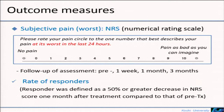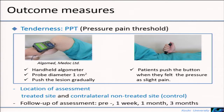As for outcome measures, the intensity of maximum subjective pain at the site of the region was measured using NRS, and the ratio of responders was calculated. Responder was defined as a 50% or greater decrease in NRS score one month after treatment compared to before treatment. The threshold of pressure pain — hereafter PPT — was measured using a handheld algometer. The clinician compressed the target site at constant speed and the patient pushed a button when they felt the pressure as slight pain, at which point the compression intensity was recorded. We measured PPT at the treatment site and the opposite site of the same location as the control.